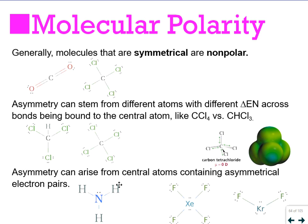Asymmetry can arise from central atoms containing asymmetrical electron pairs. So, this is ammonia. Now, you see three what appear to be perfectly opposed bonds, but there's this electron pair here. And that electron pair right there makes this a very polar molecule, okay? So, when you look at it, you see this electron pair up top. That's going to make it imbalanced.